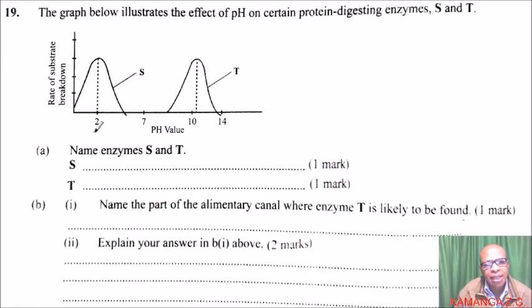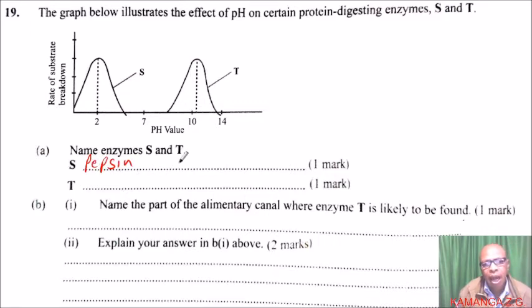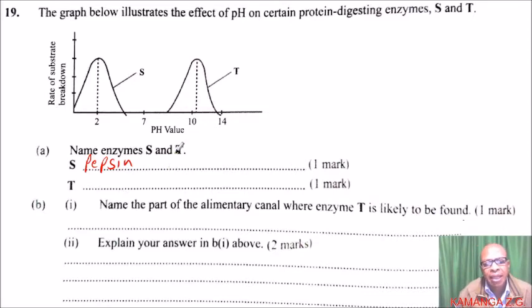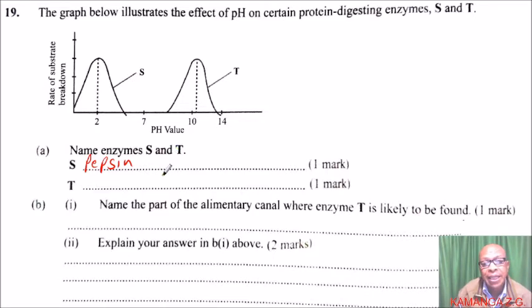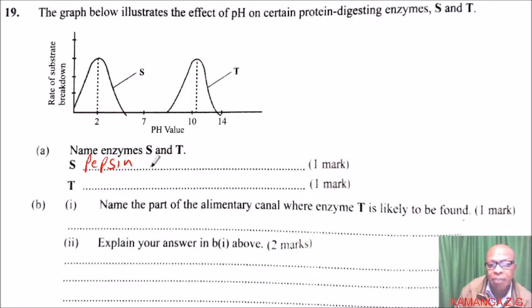Enzyme S is pepsin. Pepsin is a stomach enzyme that serves to digest protein found in ingested food, so it helps in the digestion of proteins from the food that is taken in.